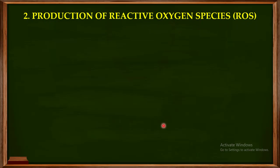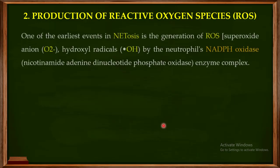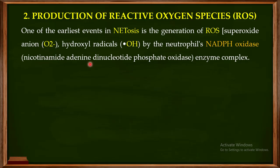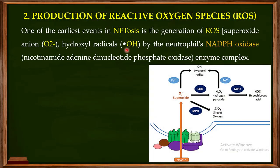The second step — one of the earliest events in NETosis — is the production of reactive oxygen species (ROS), such as superoxide anion and hydroxyl radicals. These are generated by a specialized enzyme in the neutrophil known as NADPH oxidase (nicotinamide adenine dinucleotide phosphate oxidase). This NADPH oxidase is responsible for generating reactive oxygen species like superoxide anion and hydroxyl radicals.